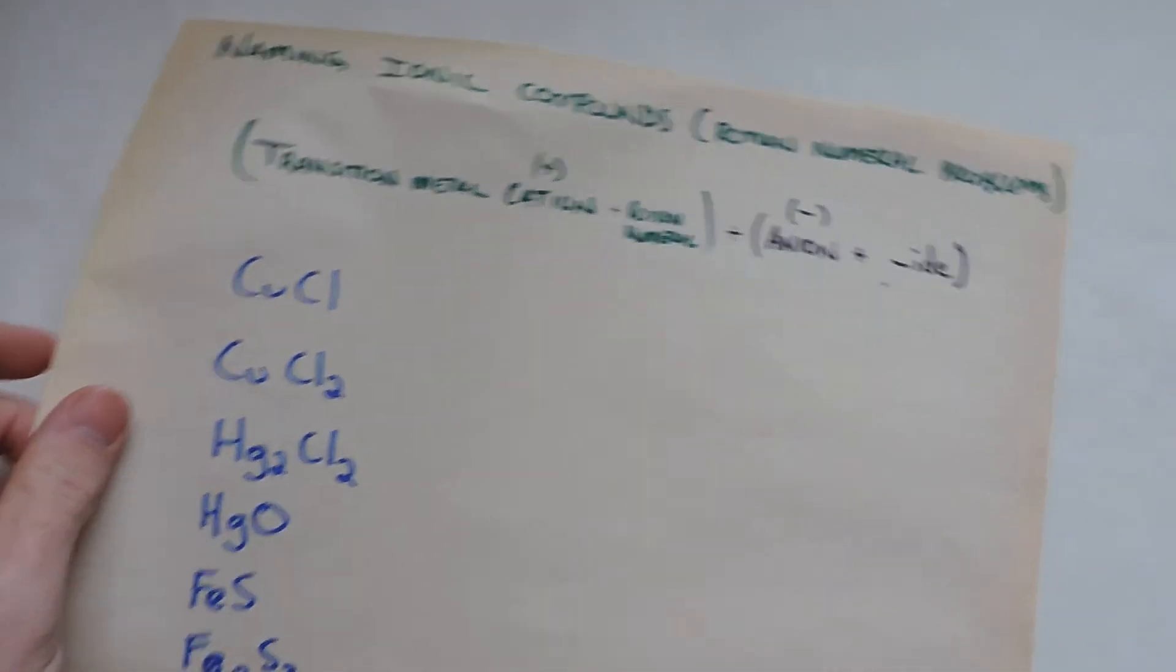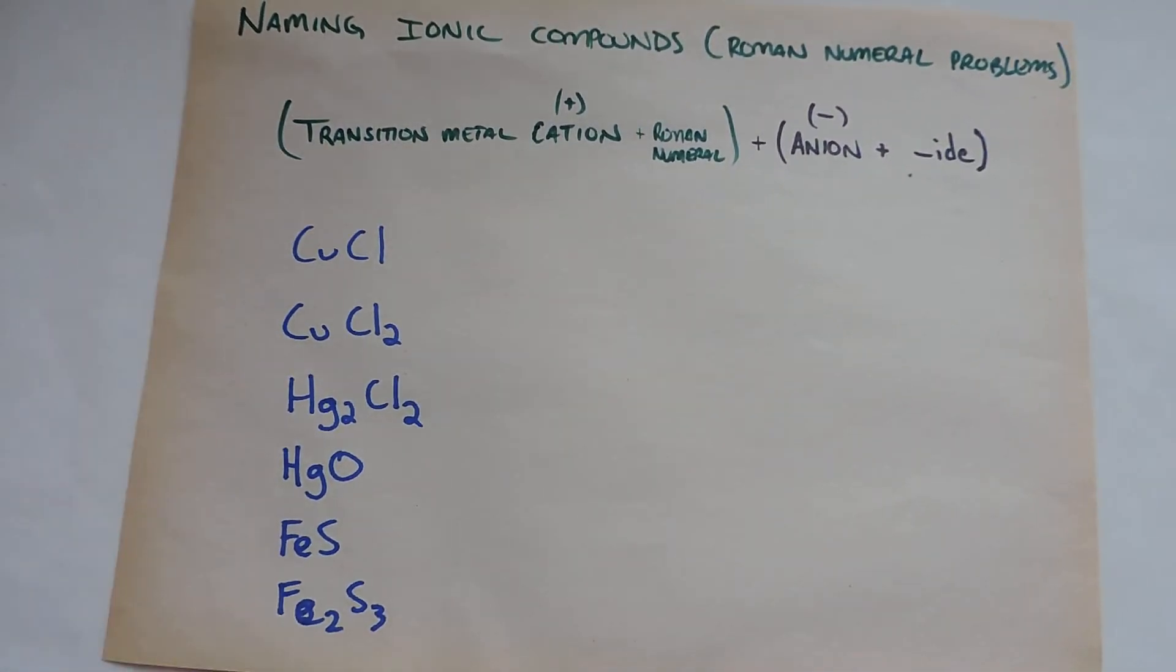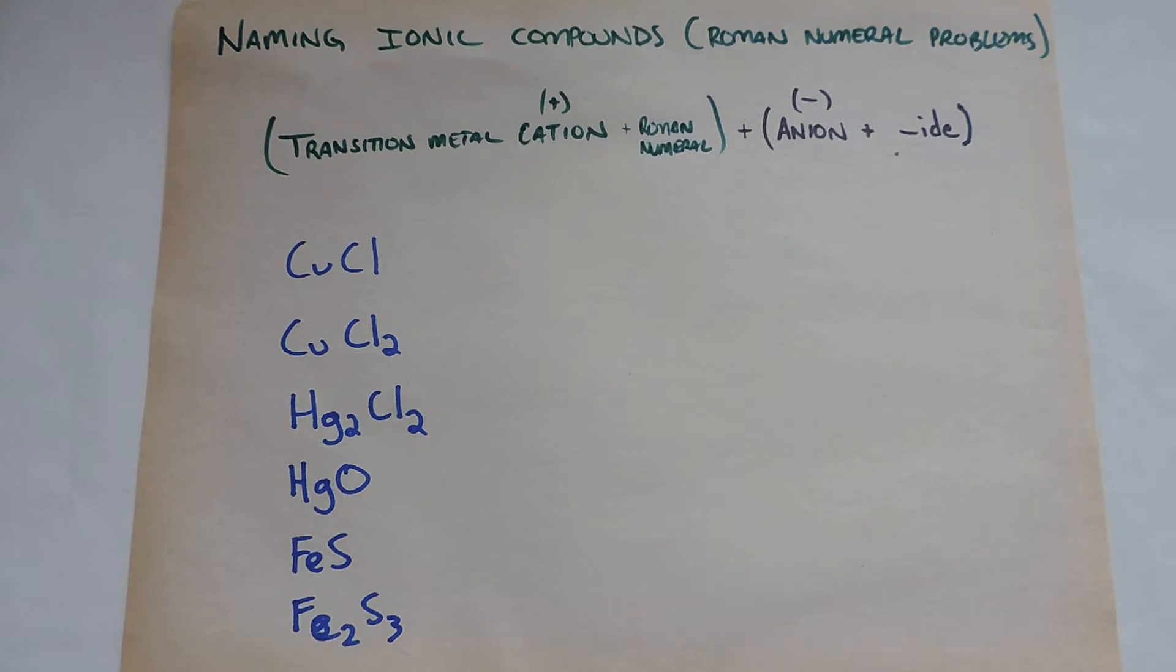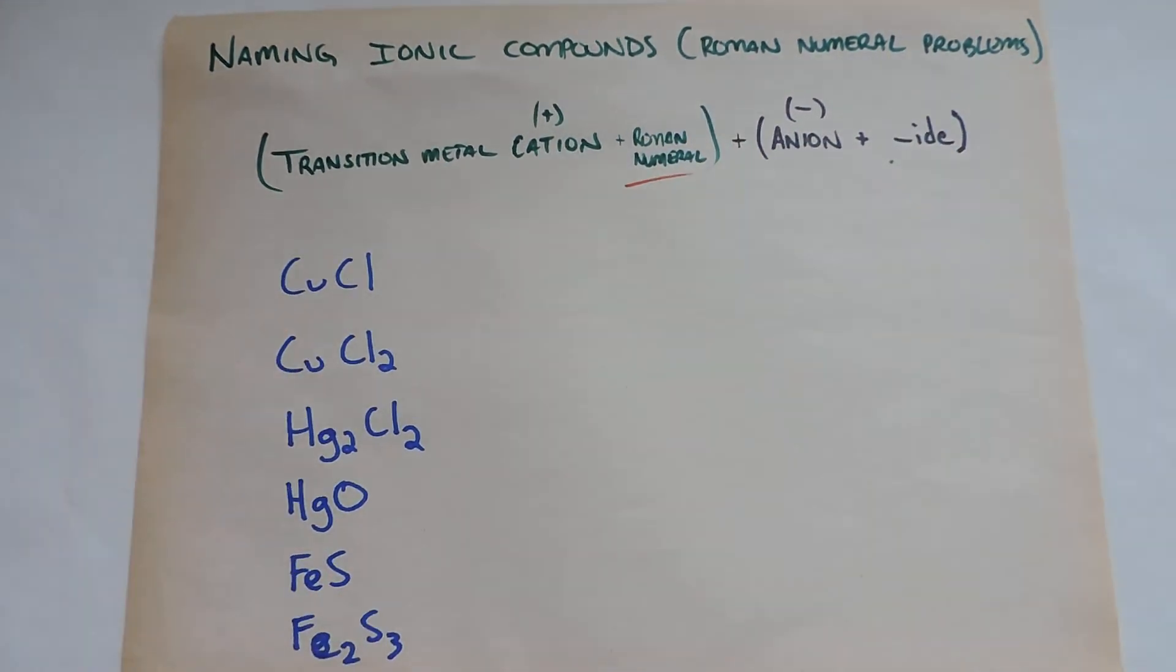Now we get to transition metals, which are going to be things in between the metals and the non-metals like copper, silver, gold, and lead. That's where it's still easy, but there's one thing you have to remember. And that one thing is going to be the Roman numerals.